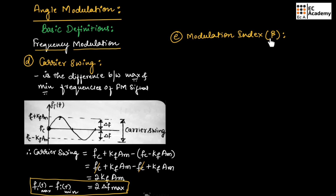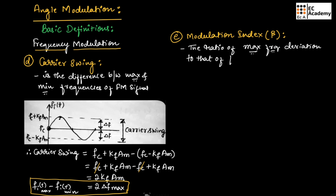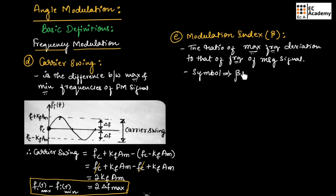Now let us see the modulation index of the FM signal, represented as β. The modulation index is defined as the ratio of maximum frequency deviation to the frequency of the message signal. It is denoted by the symbol β, and we can write β = ΔF_max / fm. The modulation index has no unit. These definitions are very important for examinations. This is about introduction to angle modulation. Hope you have understood the topic. Thank you.